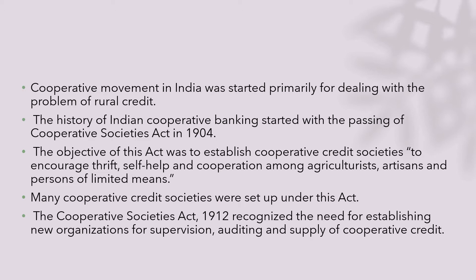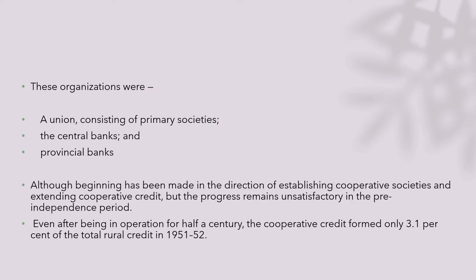The Cooperative Societies Act of 1912 recognized the need for establishing some kind of new organization to deal with aspects like supervision of credit, auditing of credit, supply of cooperative credit, etc. This actually consisted of a union which would comprise of certain primary societies, and also there were many banks, central banks, as well as provincial banks.